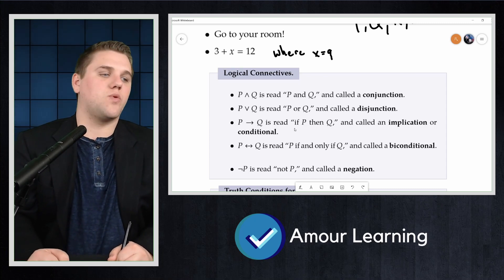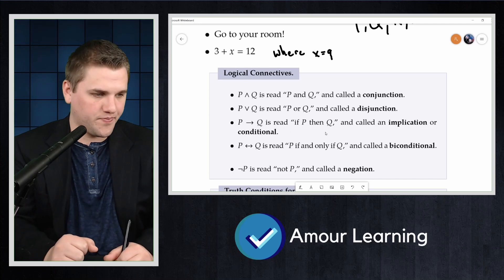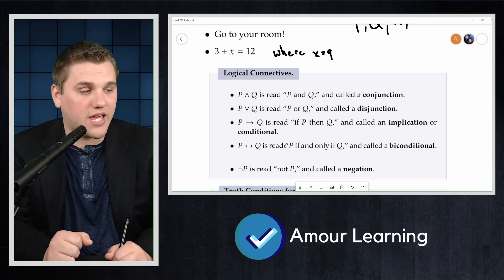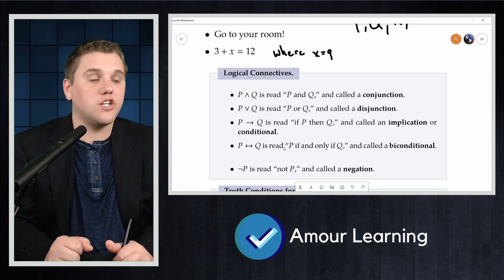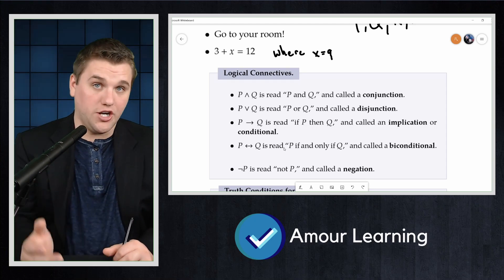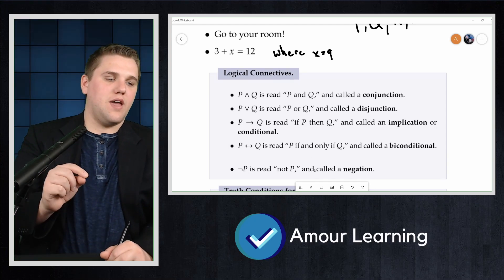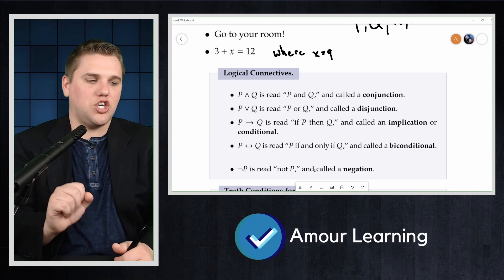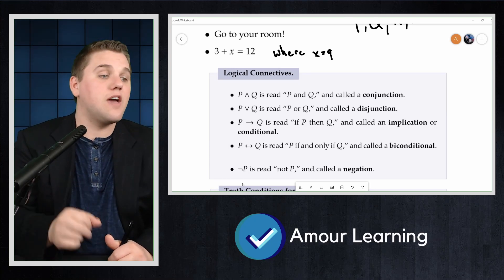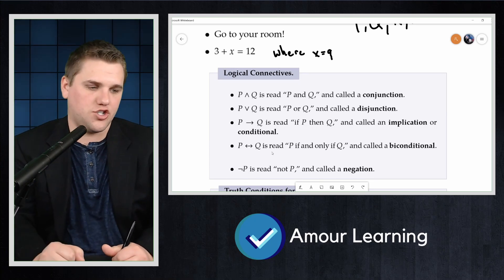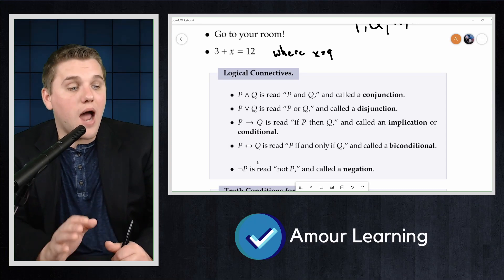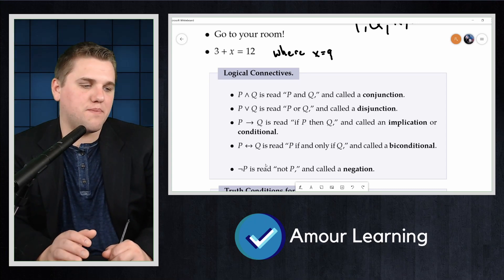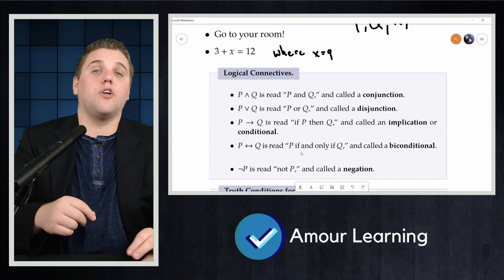P arrow Q is read if P then Q and called an implication or conditional. We'll use the word implication in this course. P arrows in both directions, Q is read P if and only if Q and called a bi-conditional. Not P with a little thing in the front of the P is read not P and called a negation.